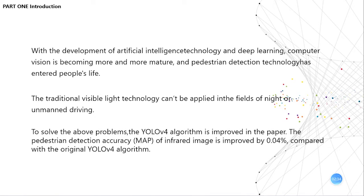Before the appearance of YOLO, the detection speed of deep learning was not very fast and real-time performance could not be guaranteed, especially in future unmanned driving technology. Redmon proposed YOLO — You Only Look Once — a unified real-time object detection algorithm, which entered the field of one-stage target detection. The one-stage approach solves the problem of speed in target detection and greatly improves real-time performance with a certain level of accuracy.